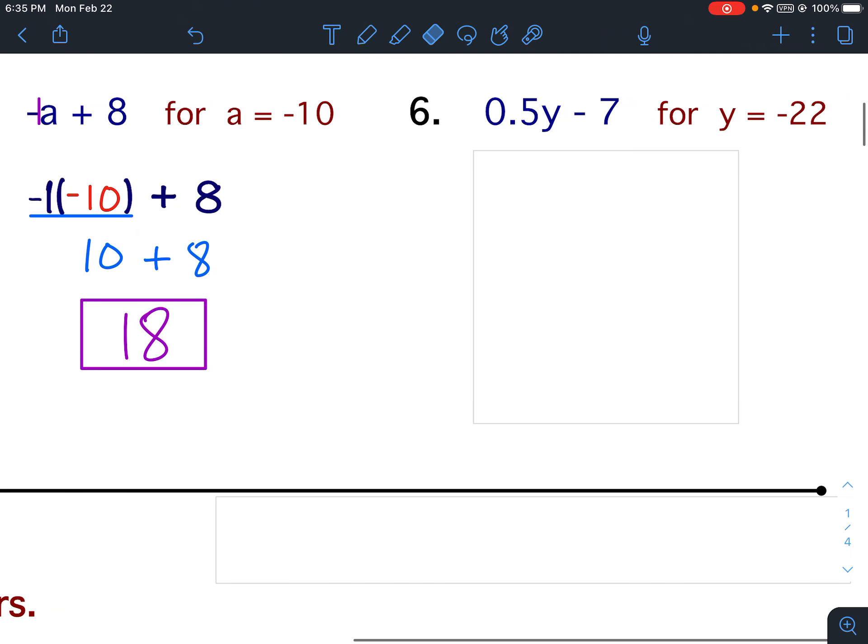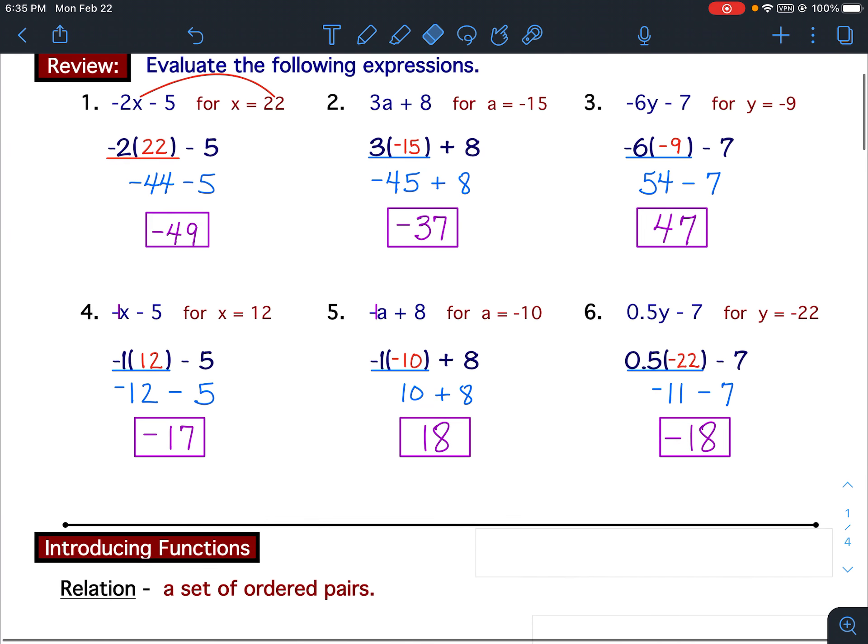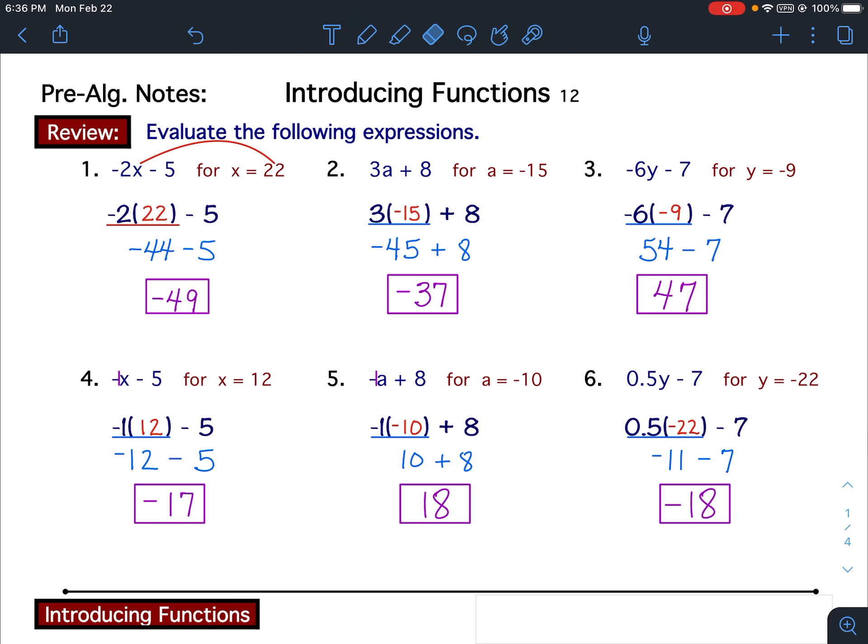Number 6. You're going to substitute negative 22 in for the y. So you're going to plug negative 22 in for y. Half of negative 22 is negative 11. Negative 11 minus 7 is negative 18. All right. So that is it for the review. Make sure you have it all written down. If you made any mistakes, please fix them.